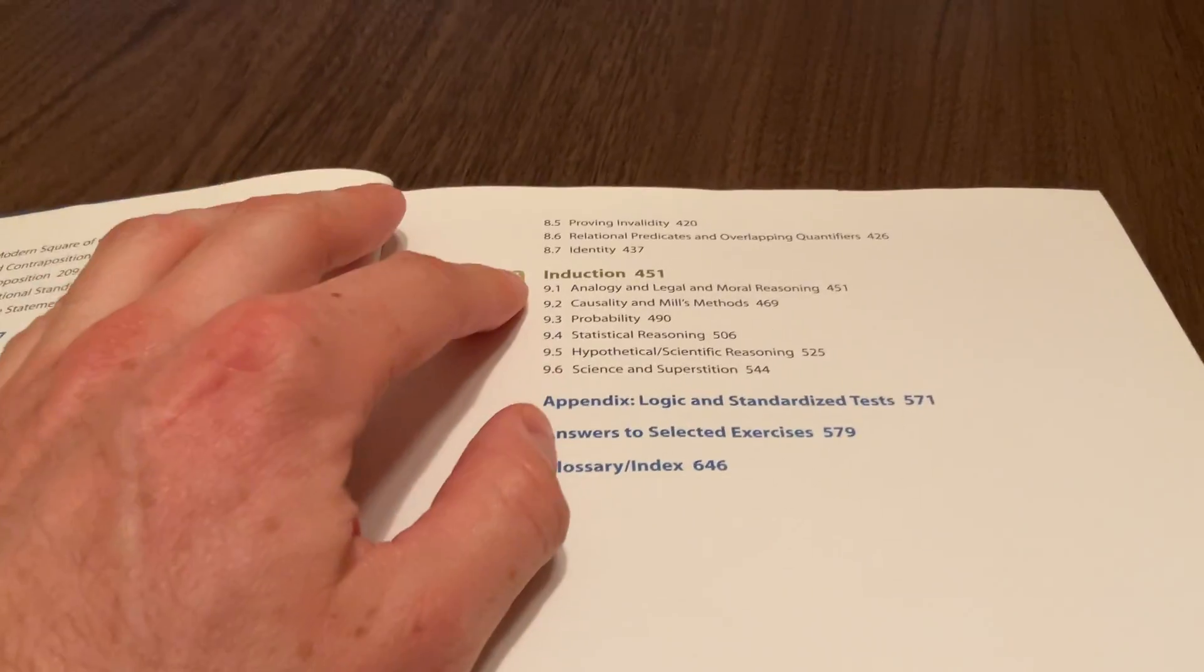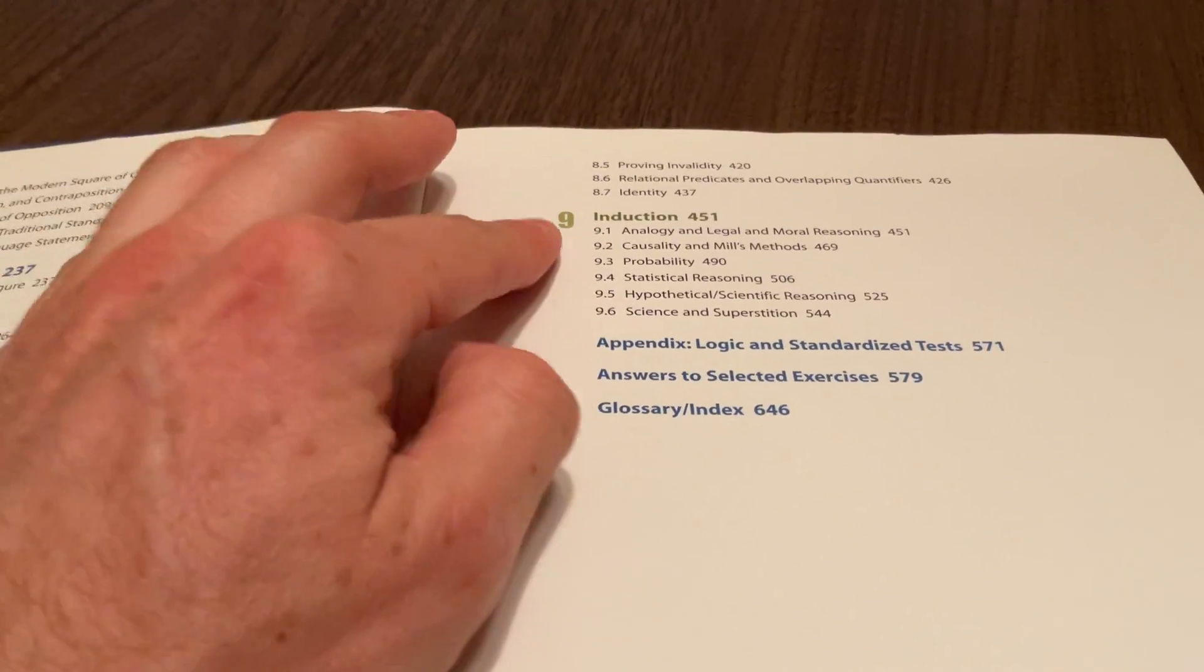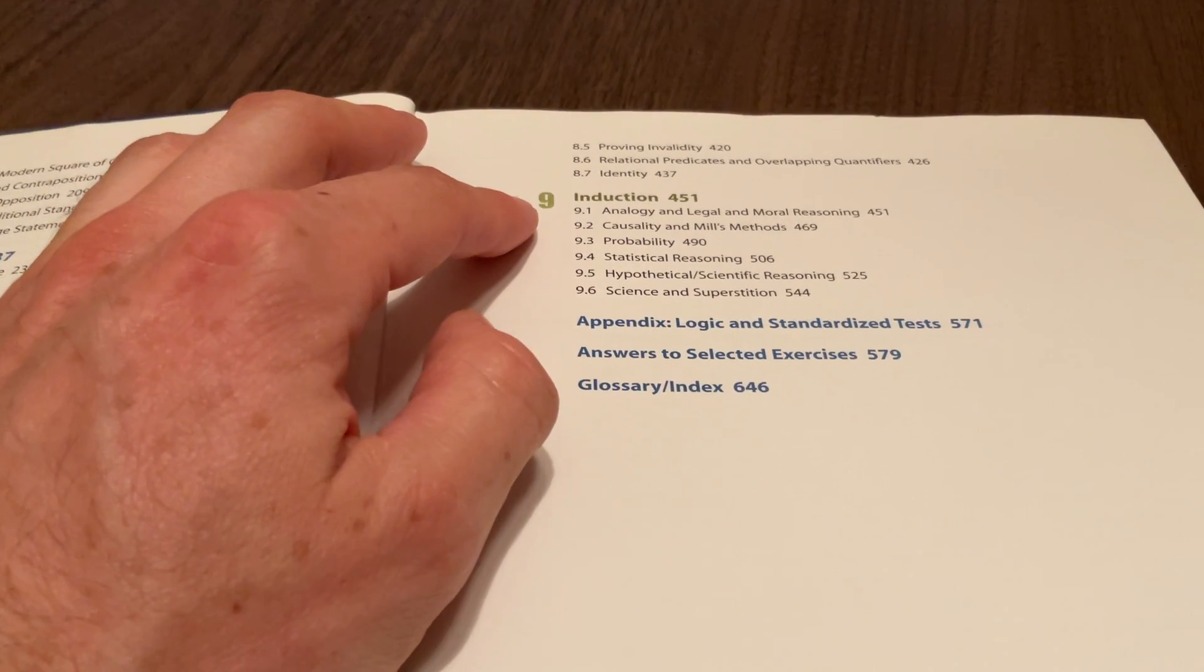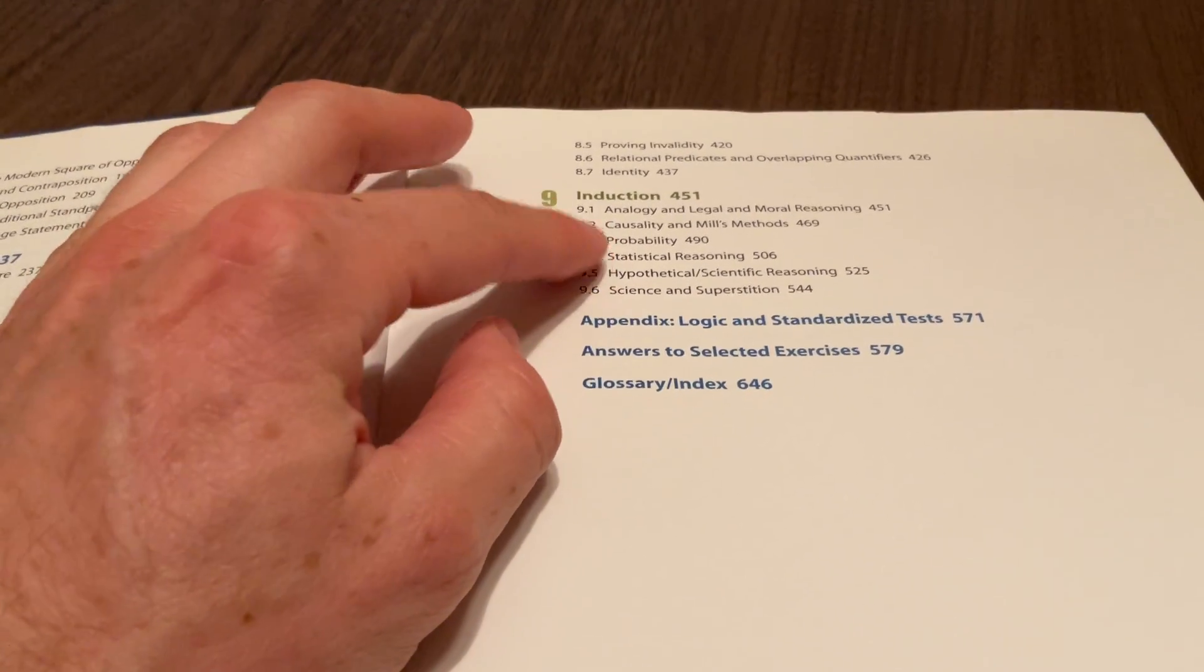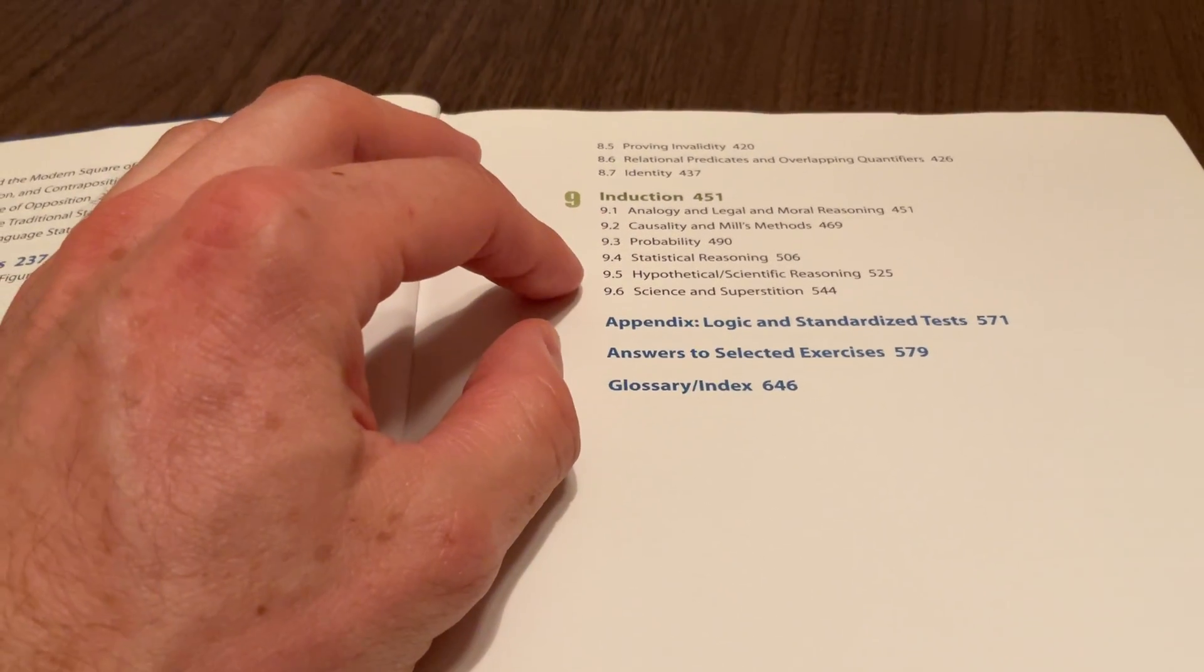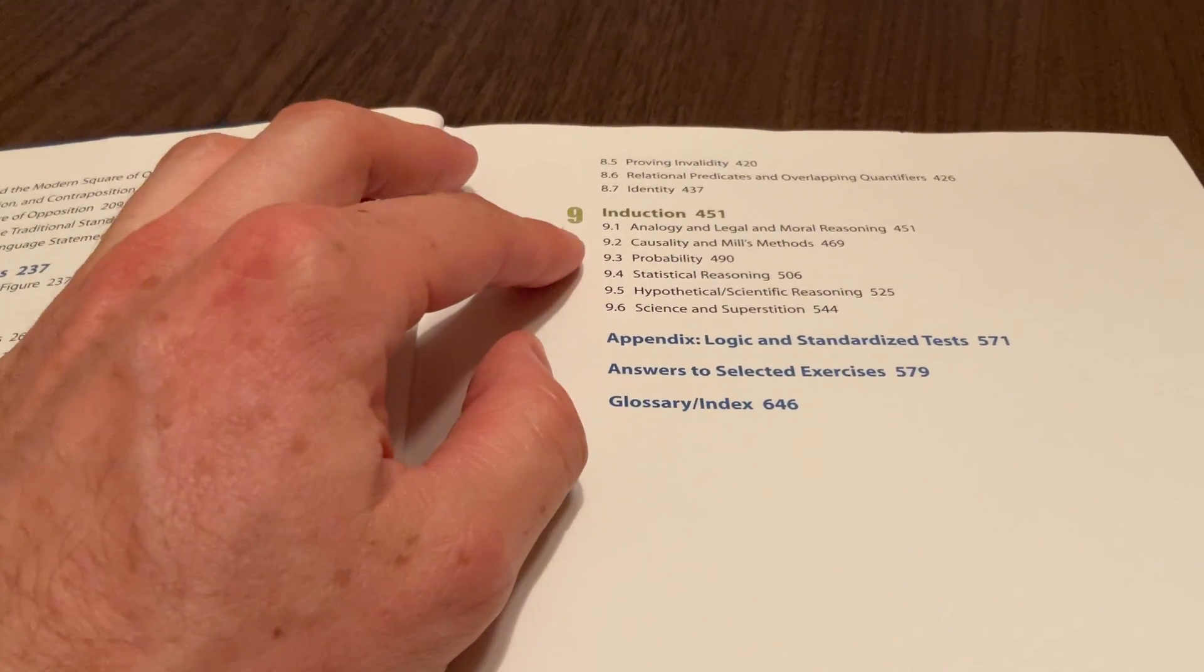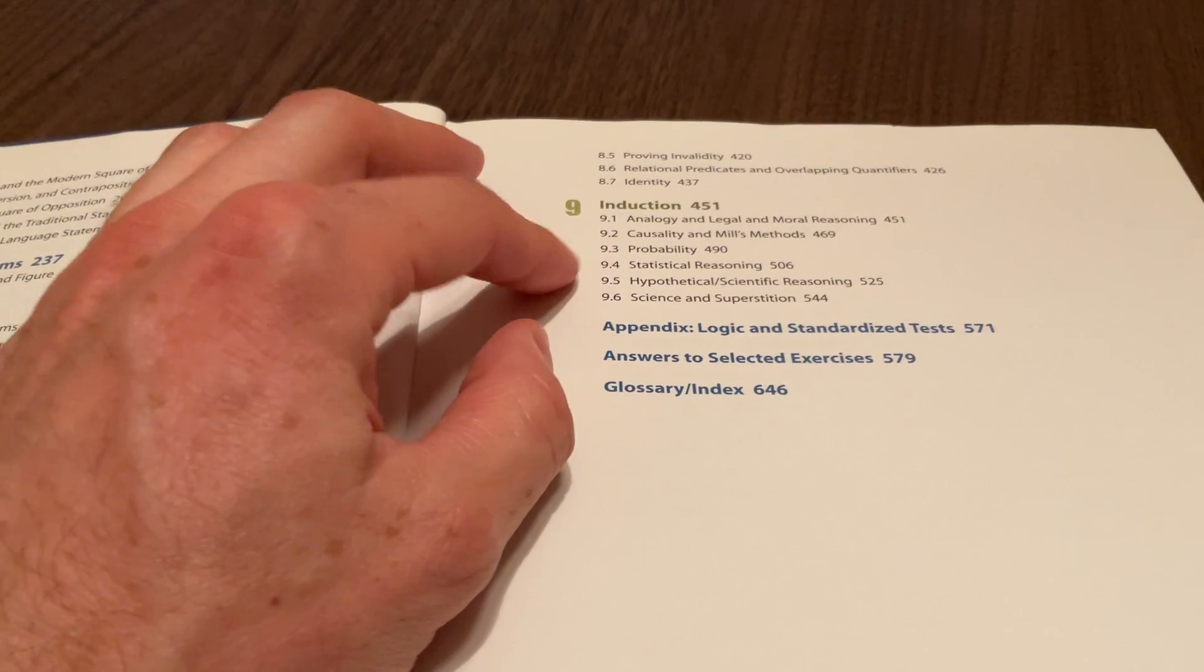And then we have the last chapter, which is on induction. This is a little bit light. I think the newer editions expand on this. Here you have, for example, probability, statistical reasoning, hypothetical and scientific reasoning. I think these have been made more or less entire chapters in the newer editions.